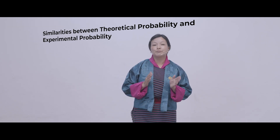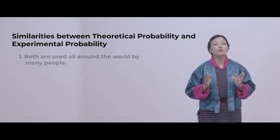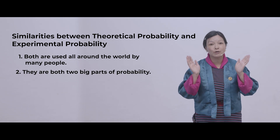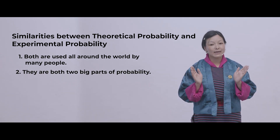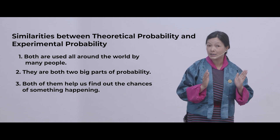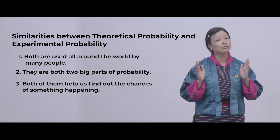Till now you have learned how to find theoretical probabilities and experimental probabilities, and in experimental probability you learned by doing an experiment. We will now learn about the similarities between them. Both are used all around the world by many people and are two big parts of probability. Both help us find out the chances of things happening as well as the chances of things not happening, and in this way it helps you make decisions in your life.